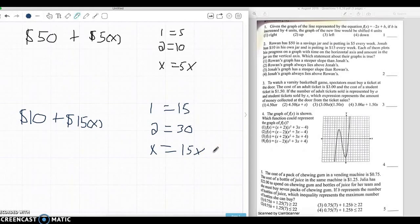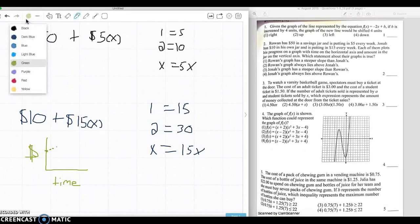The question is, each of them plots his progress on a graph with time on the horizontal axis and the amount in the jar on the vertical. So if we find a quick graph, we know it's only going to be positive. This is time in weeks, and this is the money. We know that Rowan is going to start at like $50, which is going to be up here. And $5, it's going to go here, here, here.